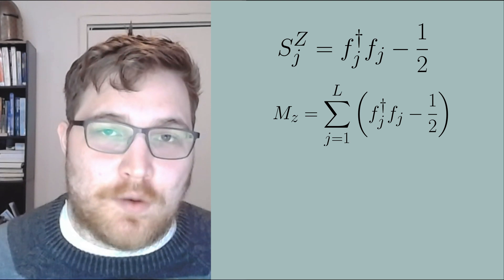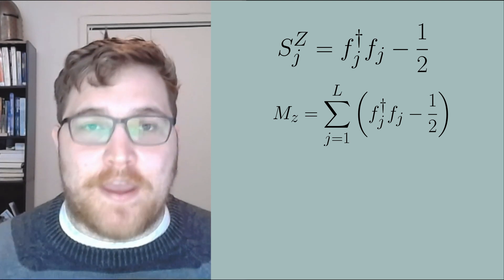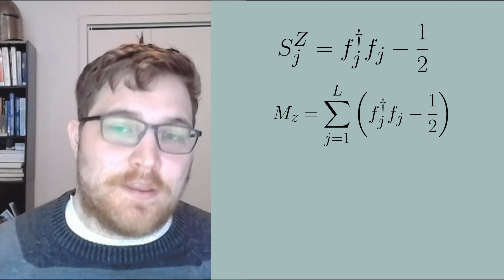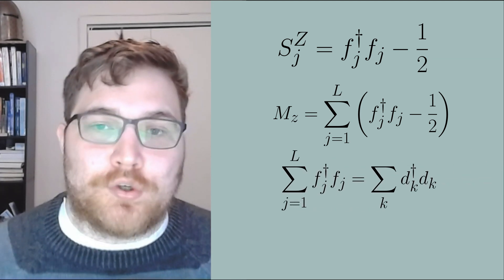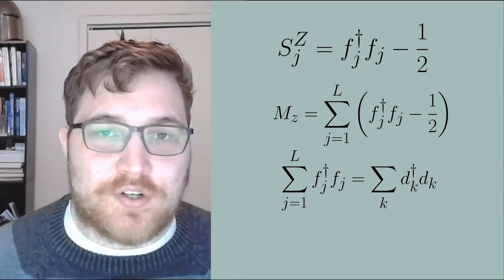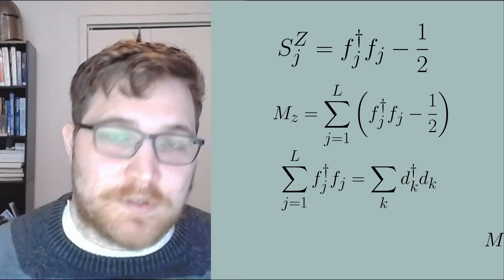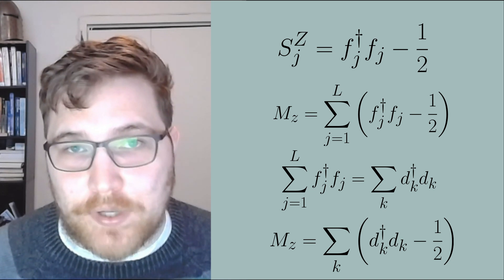As we saw while solving the model, we can rewrite this in terms of the momentum operators. The total magnetization in the z direction is therefore written as the following expression in terms of the number operators that appear in our Hamiltonian.